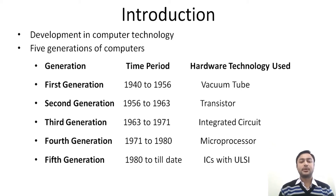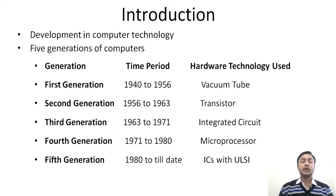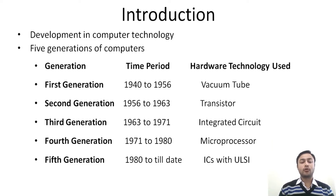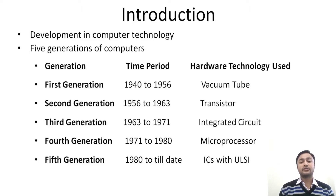The first generation time period is 1940 to 1956 and the hardware technology used was vacuum tube. The second generation was from 1956 to 1963 and used transistors. The third generation was 1963 to 1971 using integrated circuits. The fourth generation was 1971 to 1980 using microprocessors. The fifth generation is from 1980 to till date, using integrated circuits with ultra-large-scale integration.